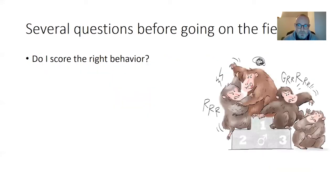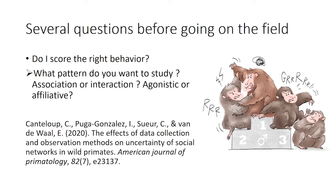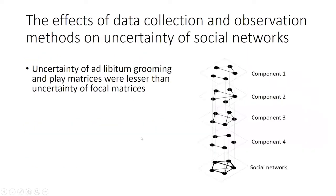The first question to ask before going into the field is: do I score the right behaviors? What pattern do you want to study? You have to wonder whether it is association or interaction, agonistic or affiliative. We show, for instance, that the uncertainty of ad libitum grooming and play matrices was less than the uncertainty of focal matrices, meaning that the way you collect data is important.